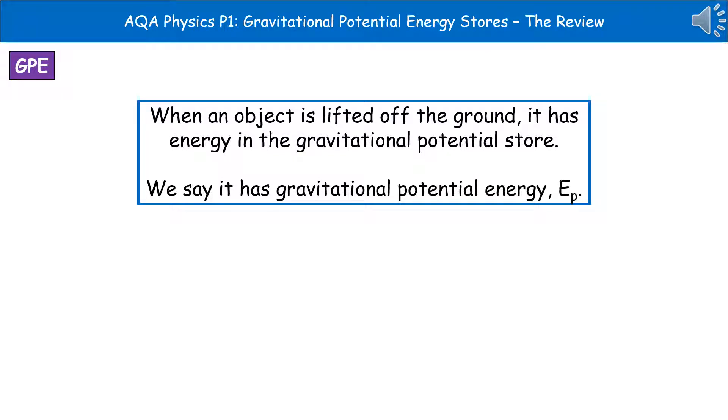Welcome to our review on gravitational potential energy stores. The first thing we need to remember is that when we lift an object off the ground, it has energy in its gravitational potential store. We generally say that the object has gravitational potential energy, given the shorthand code of a capital E with a little P to the bottom right.